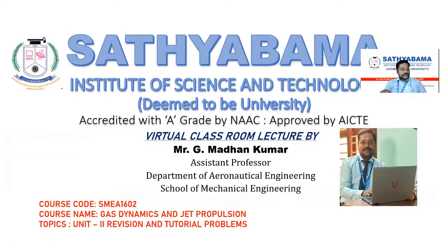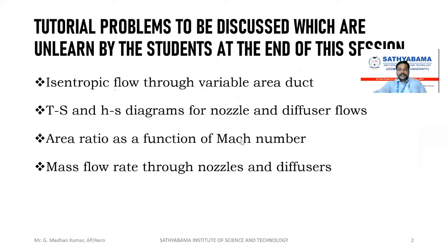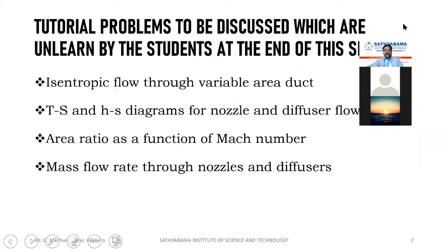So now we are going for unit two. Unit two is nothing but flow through variable area. When we talk about the nozzle, there is valve flow on the panel — that is unit two. Here we have discussed about the area-velocity relation, and then the convergent nozzle, and then convergent-divergent nozzle. We have to study some theoretical parts and practical aspects.